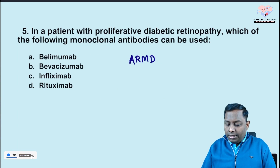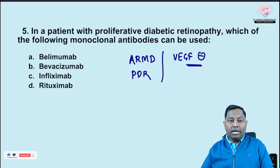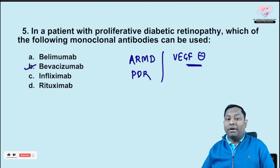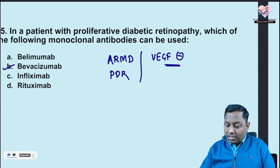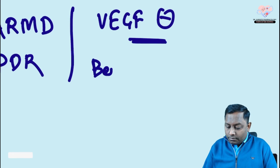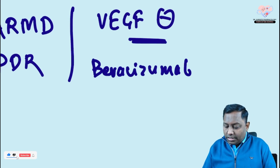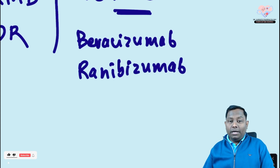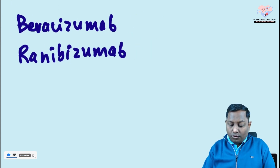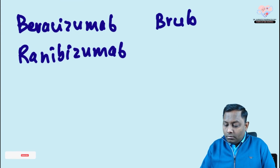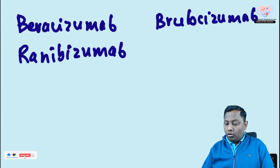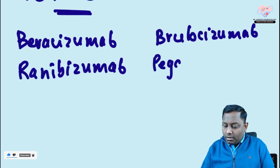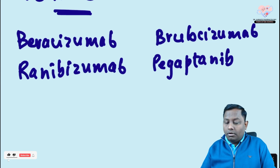Fifth question: in a patient with proliferative diabetic retinopathy or age-related macular degeneration, we use VEGF inhibitors. Among the options — belimumab, bevacizumab, infliximab, rituximab — the correct answer is bevacizumab. Other VEGF inhibitors include ranibizumab, brolucizumab, and pegaptanib. A mnemonic: 'Bevacufrani brought a pig' helps remember beva-, rani-, brolu-, and pegaptanib.